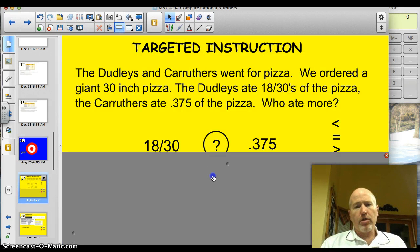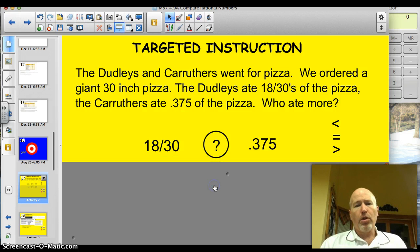The Dudleys and the Crothers went for pizza. We ordered a giant 30-inch pizza. The Dudleys ate 18-thirtieths of the pizza. The Crothers ate 0.375 of the pizza. Who ate more?